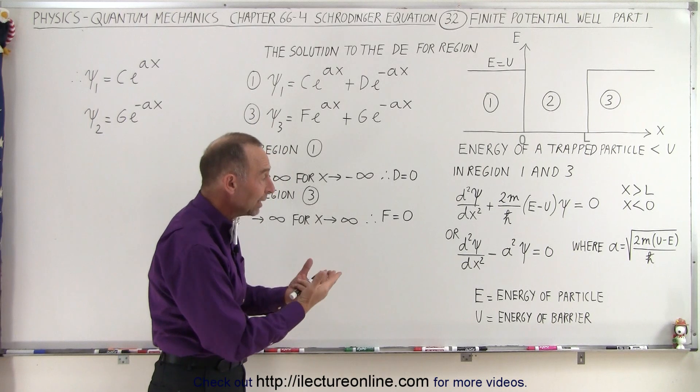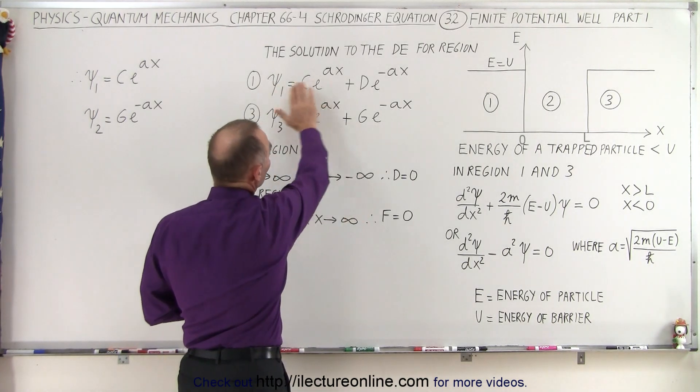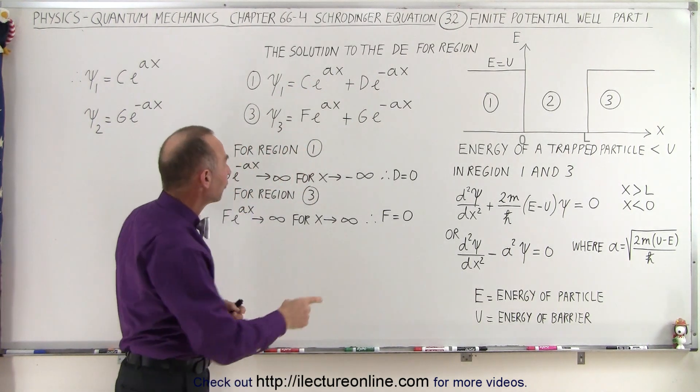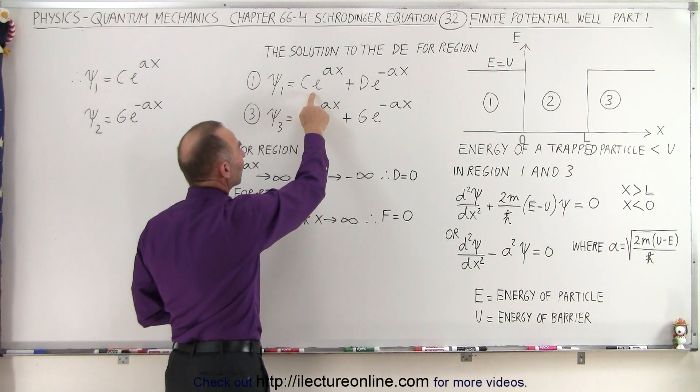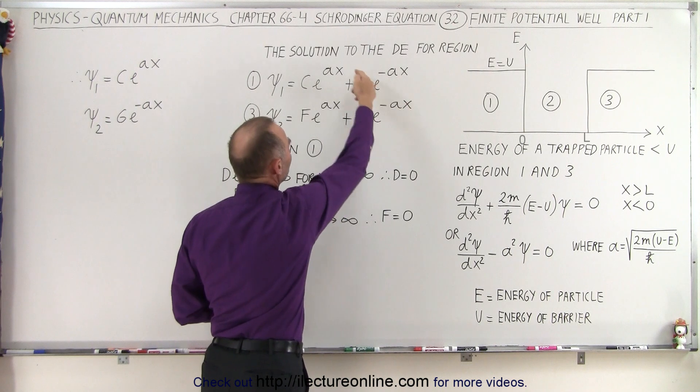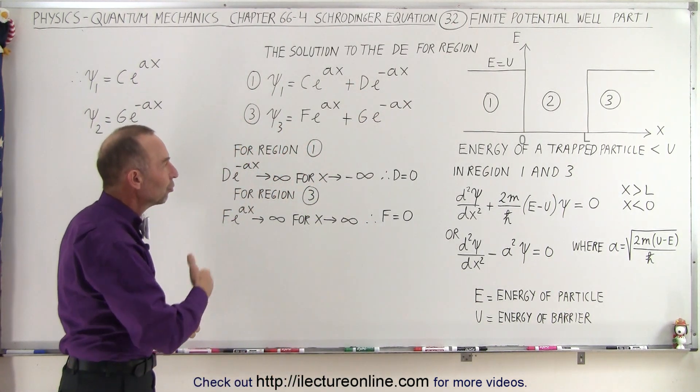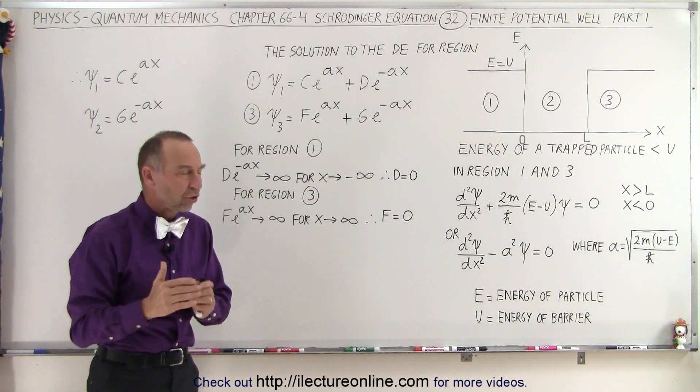And then when you see that, you can recognize it as a differential equation that has the standard solution, which are written right here. So we're going to look at the standard solutions for region 1 and region 3. So it's going to be some constant times e to the ax, plus some other constant times e to the minus ax, and of course, the general solution looks exactly the same for both regions 1 and region 2. But now we want to explore those regions just a little bit more.